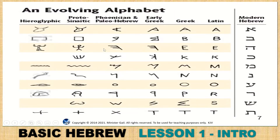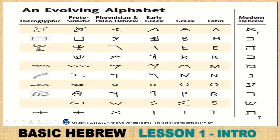It is an evolving alphabet. It started out with the hieroglyphics — the Hebrews had them first and the Egyptians copied the Hebrew. Everybody copied from the Hebrew alphabet. Here is the Phoenician, early Greek, then regular Greek, then Latin. They took the first letter and made it into an A, but it is not an A in Hebrew.